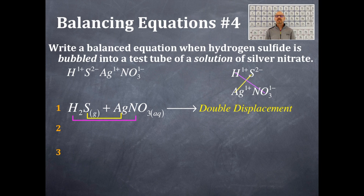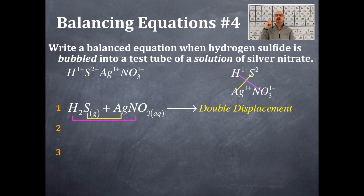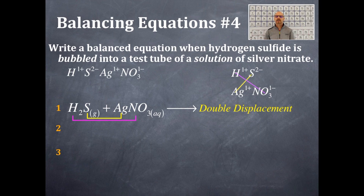The other product is Ag₂S. Silver is a one plus charge, sulfide is a two minus charge. Absolute value, flip, bring it down — I get Ag₂S. Sulfides, looking at solubility rules, are insoluble — they are solids. Exceptions are ammonium ion and the alkaline metals. Silver is not ammonium ion (NH₄⁺) and silver is not an alkaline metal (group one). Therefore, silver sulfide is a solid precipitate.